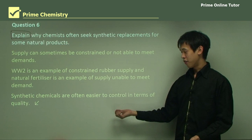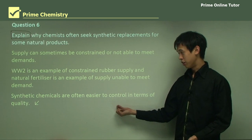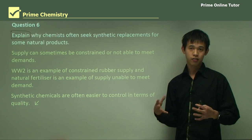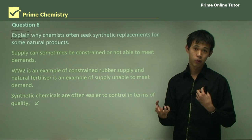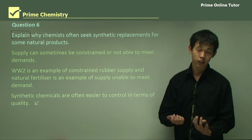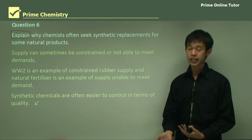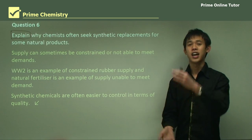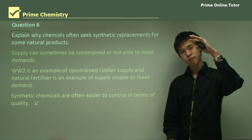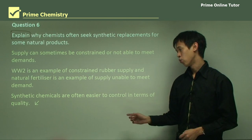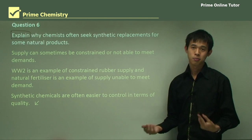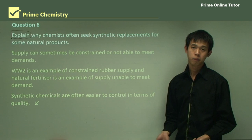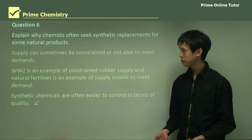Synthetic chemicals are also often easier to control in terms of quality. Because we're generating them from chemicals we can control very accurately, compared to natural products which have large variance, we often prefer synthetic chemicals simply because we can control them much better.